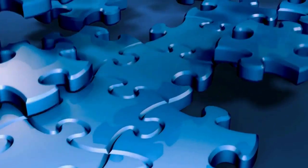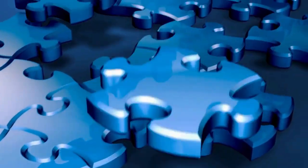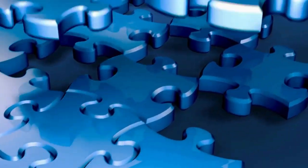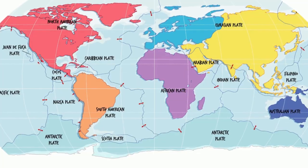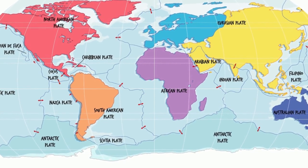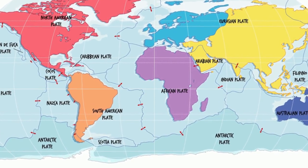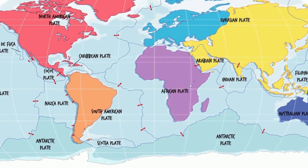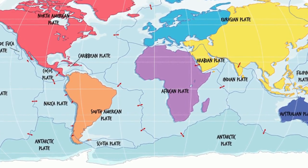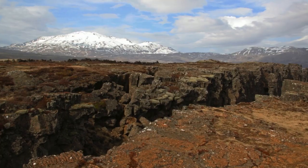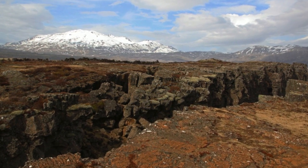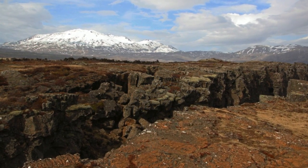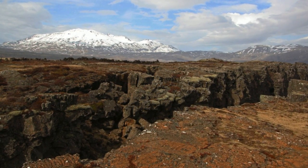Picture yourself standing on a massive earth puzzle. These puzzle pieces are like big stone slabs, and they're always in motion. When they move around and bump into each other, they create a lot of commotion underground. This commotion is what we call an earthquake.